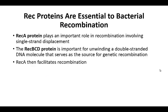Several proteins are essential to bacterial recombination. RecA plays an important role in recombination involving single-strand displacement. The RecBCD protein is important for unwinding double-stranded DNA, which serves as a source for genetic recombination. Once the DNA is single-stranded, RecA can then help facilitate the recombination event.